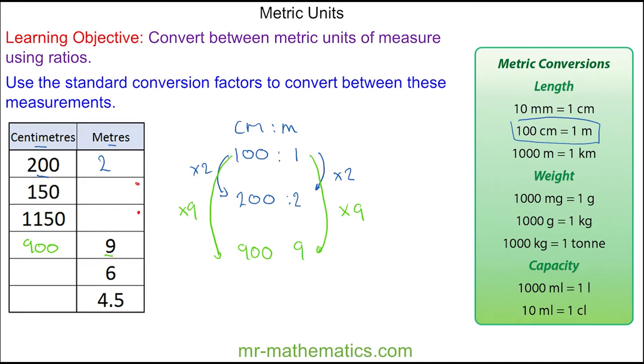Do you want to try and work out the missing four values here? You can pause the video and resume it when you're ready. So here we have 1.5 metres, 11.5, 600 centimetres, and 450 centimetres.